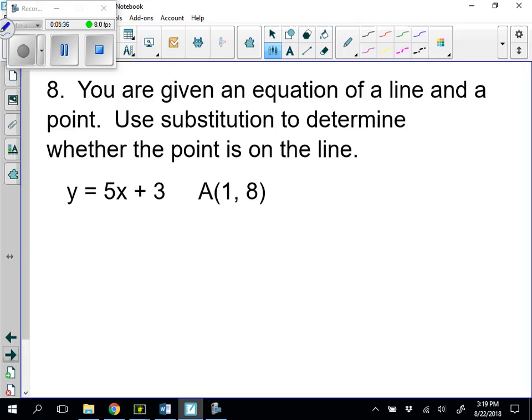Okay, moving right along. We're going to switch gears a little bit here. But we're going to deal with a line from the algebra perspective. So you are given an equation of a line and a point. Use substitution to determine whether the point is on the line. So because my ordered pair represents X and Y, I can substitute those values in. So if I check by plugging in X and Y.